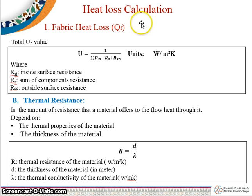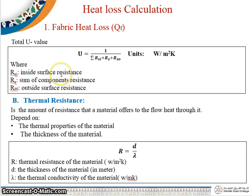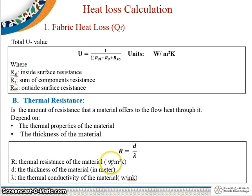To calculate U value: U equals 1 divided by sigma of RSI plus RS plus RSO, where RSI is inside surface resistance, RS is sum of components resistance, and RSO is outside surface resistance. Thermal resistance R equals D divided by lambda, where D is thickness of the material in meters and lambda is the thermal conductivity of the material. Lambda means heat flow in watts across a thickness of 1 meter of material with a surface area of 1 square meter when the air temperature on either side differs by 1 degree.